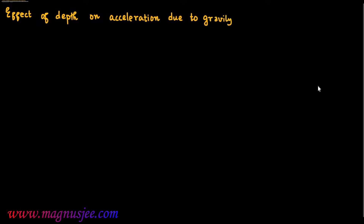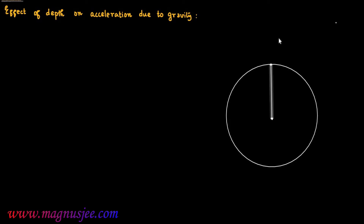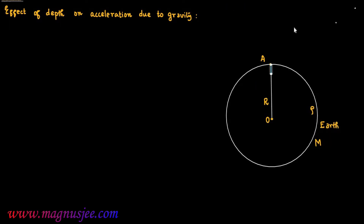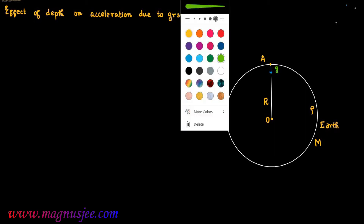The effect of depth on acceleration due to gravity. In the diagram, R is the radius of Earth and O is the center of Earth. This sphere is Earth having mass M and uniform density ρ of its material. We consider a point A on Earth's surface where acceleration due to gravity is small g, which acts radially inwards towards the center O of Earth.